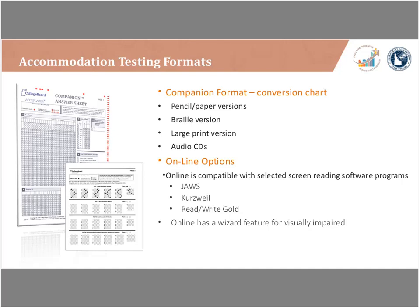Now let's talk about accommodation formats available with Accuplacer. The paper-pencil versions are referred to as the companion format. There is a conversion chart that converts companion scores into online Accuplacer scores. Available companion formats include: regular standard paper-pencil, braille, large print, and audio CDs. All of these are available in what we call the paper-pencil or companion format.